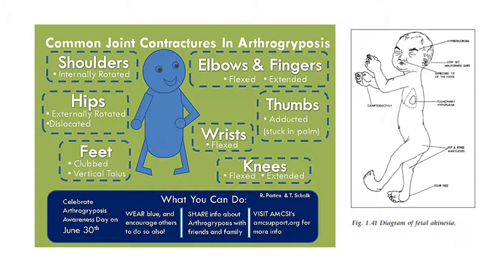Due to fetal akinesia, multiple features are seen: hypertelorism, low-set malformed ears, depressed tip of the nose, pulmonary hypoplasia, contracture of the fingers called camptodactyly, hip and knee contractures, and equinovarus of the foot.